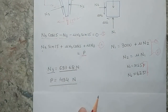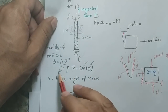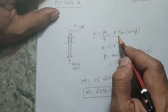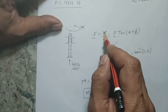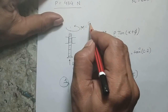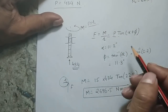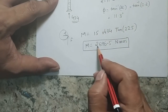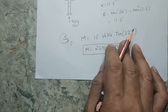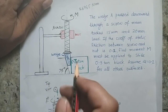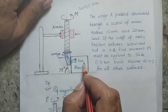Now applying P = 434 N in the screw formula: F = P·tan(α + φ), and since M = F×R, we get the moment formula M = P·R·tan(α + φ). With α = 11.2°, φ = 11.3°, and R = 15 mm, the calculation gives M = 2696.5 N·mm. Applying a moment of this magnitude will break the equilibrium so the wedge moves downward and pushes the block to the right.